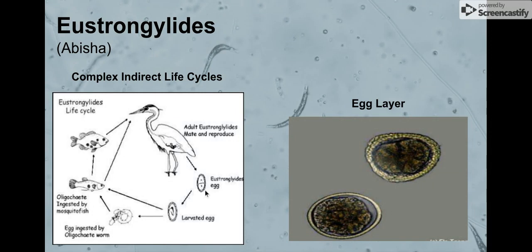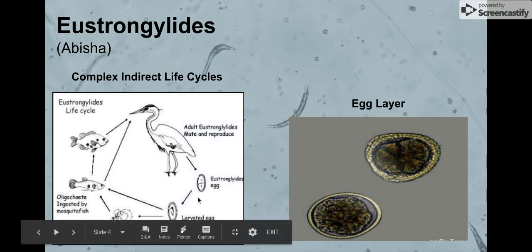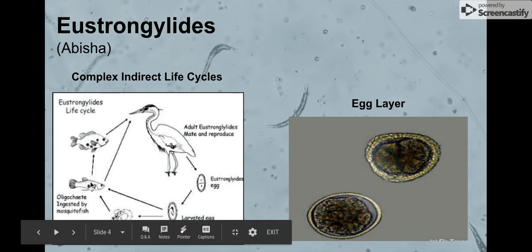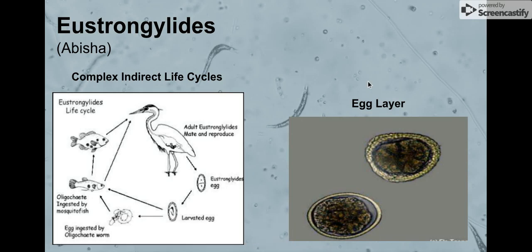These eggs get passed out and then go into an oligochaete worm, which is then ingested by a fish or a variety of fish, which is a problem.